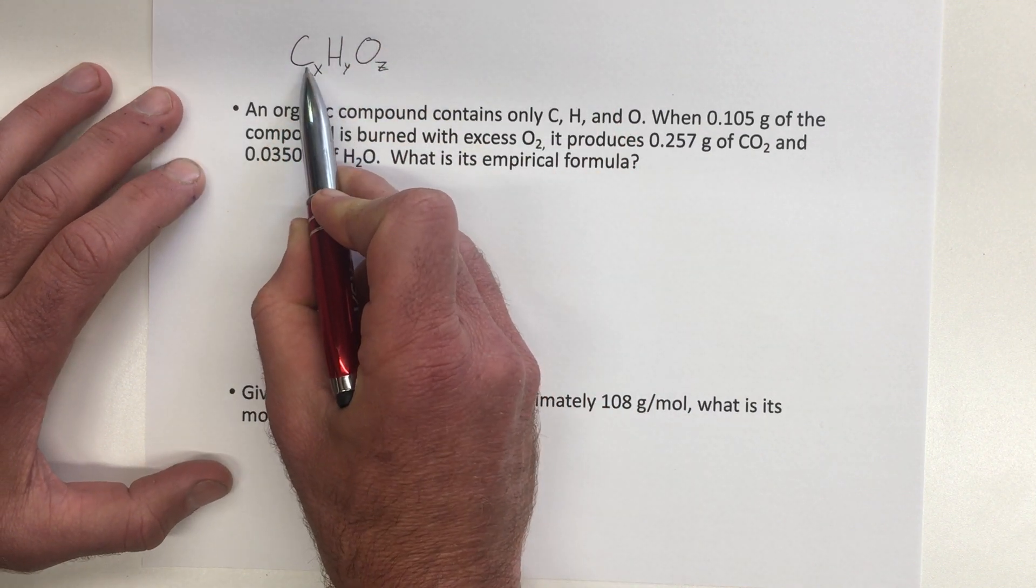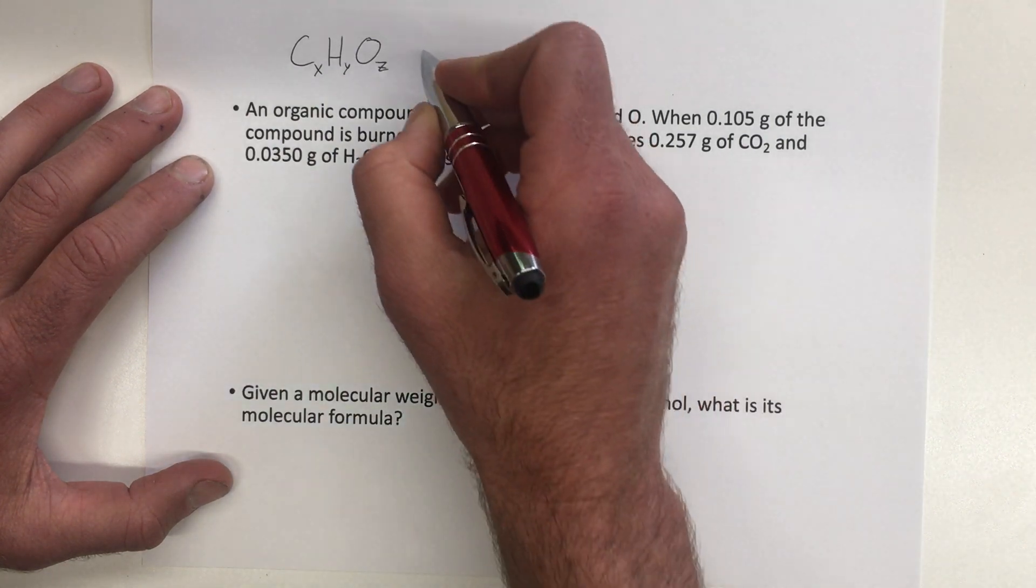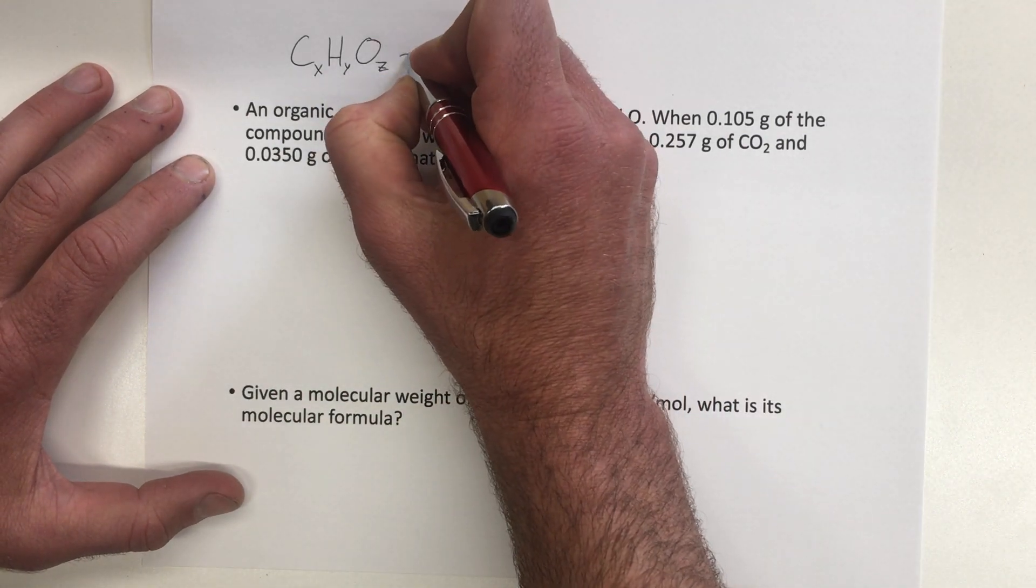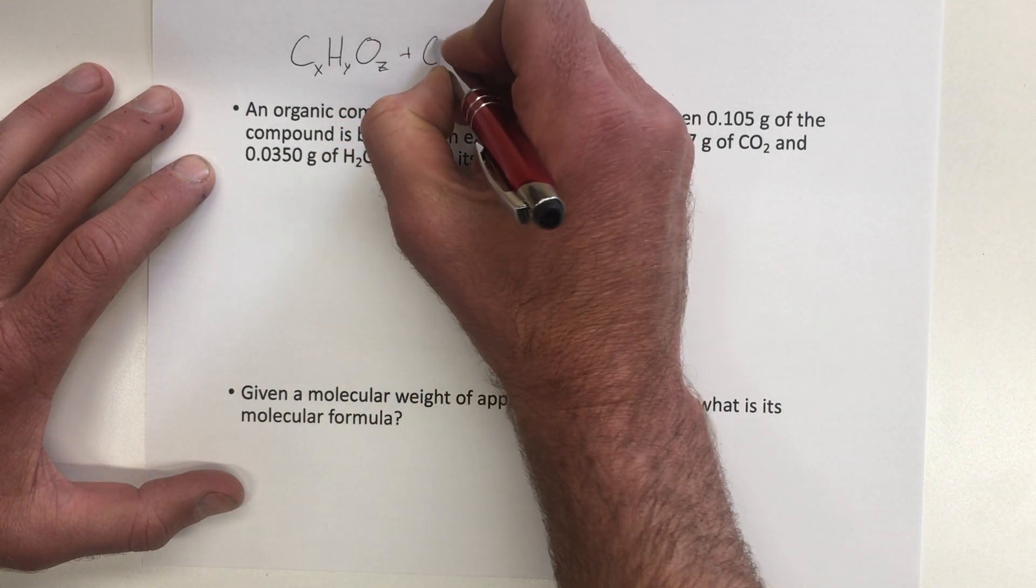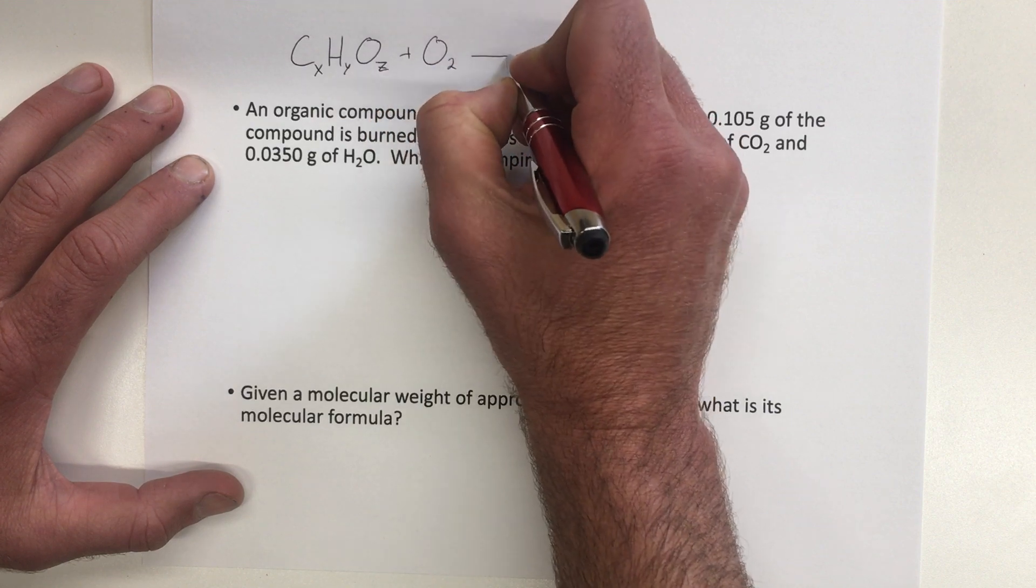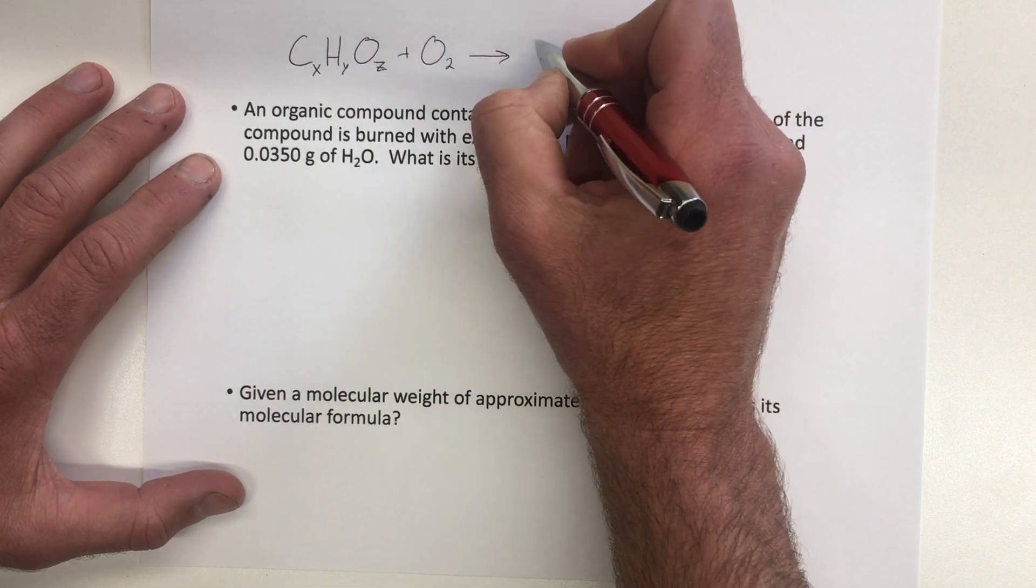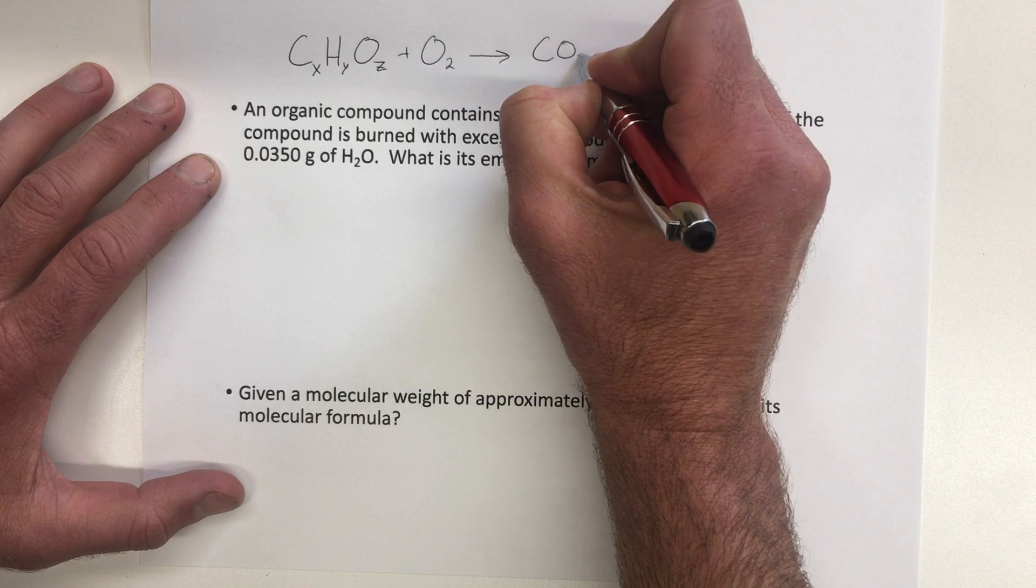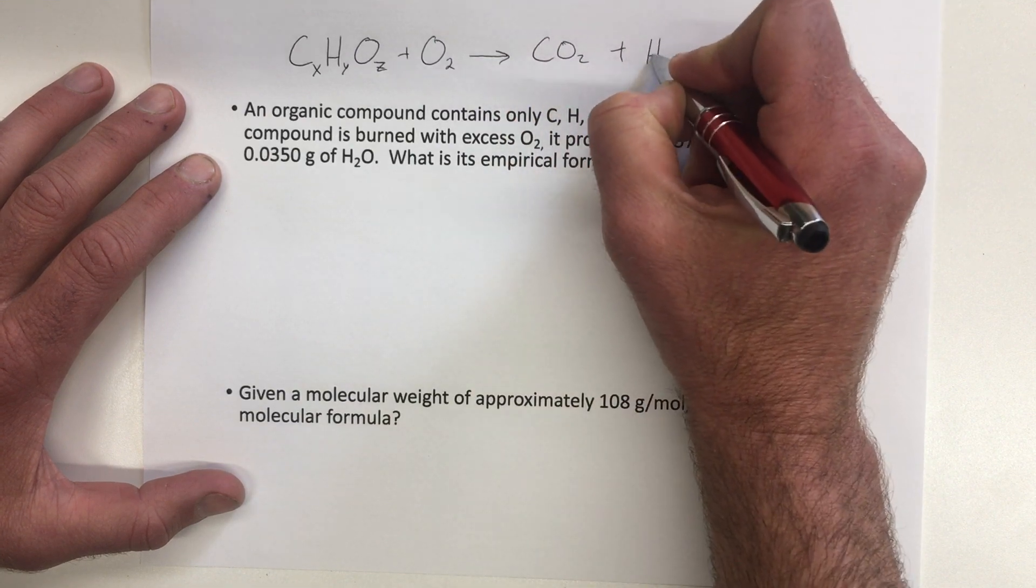So you're trying to figure out what's the mole ratio between carbon, hydrogen, and oxygen in that compound. And so what we do is we burn it with oxygen, we burn it with excess O2, and the products of the combustion reaction are going to be CO2 and H2O.